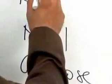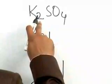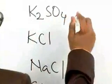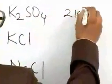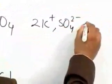Now, you just look at the number of ions produced by this. So, K2SO4 will be K+, 2K+, SO4 2-, so it will be 3.